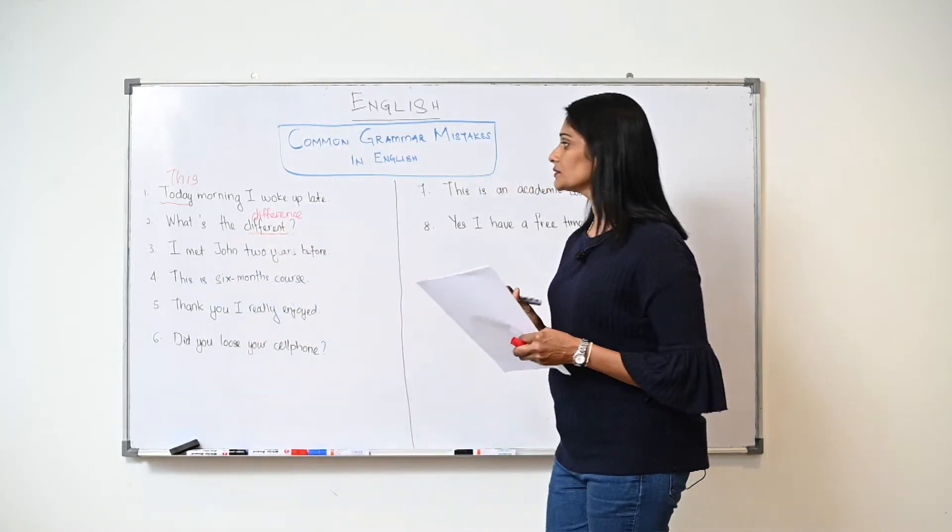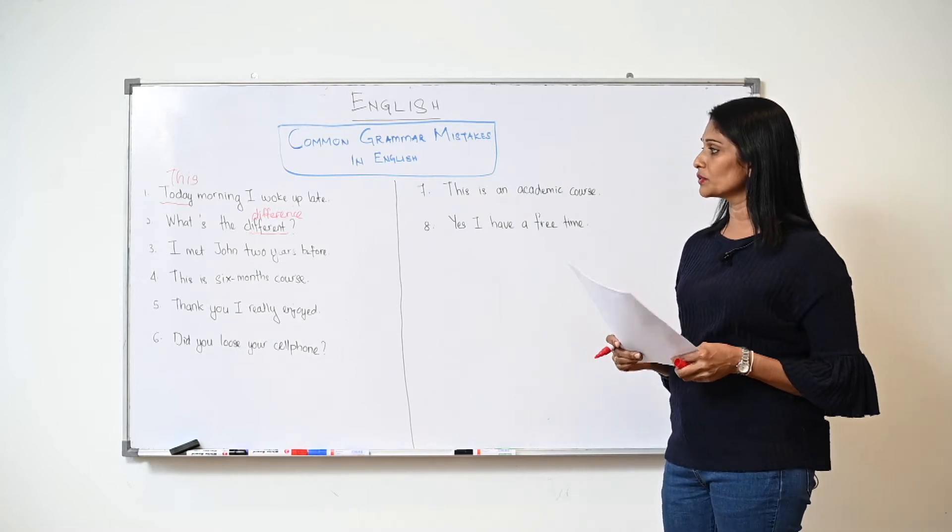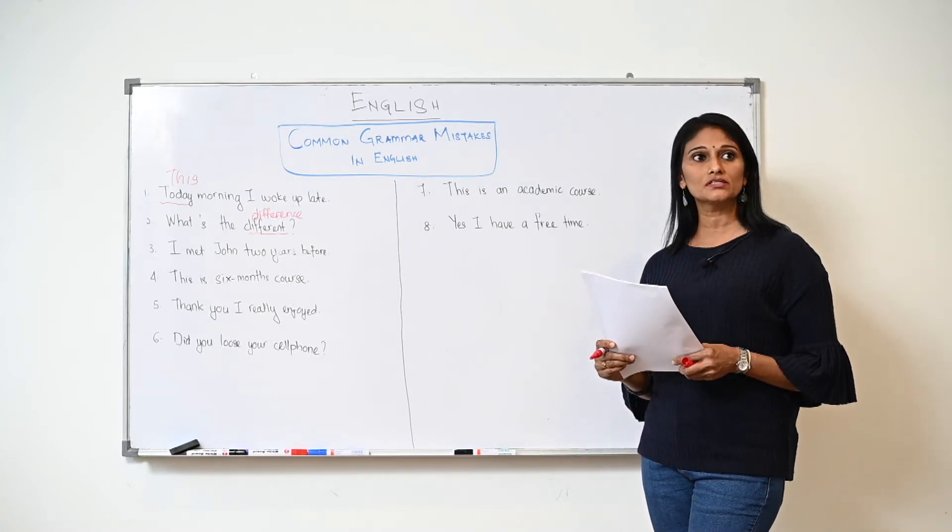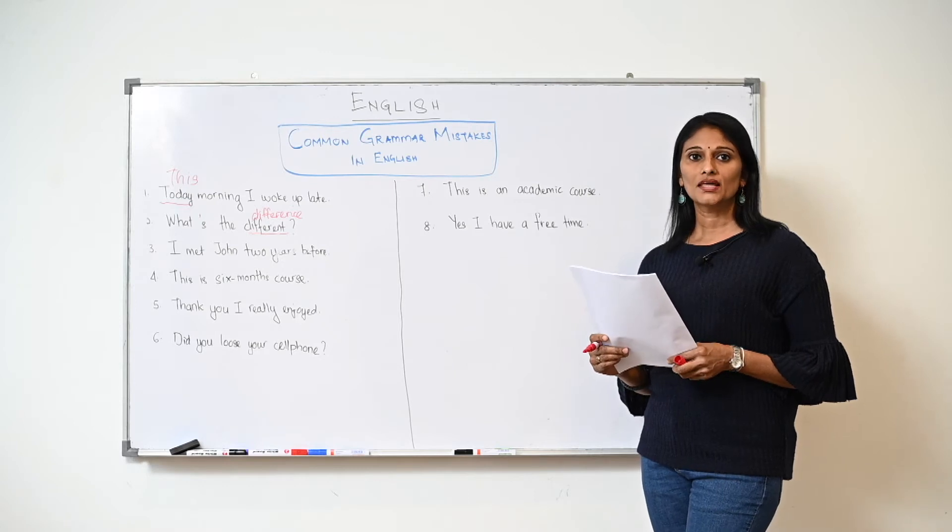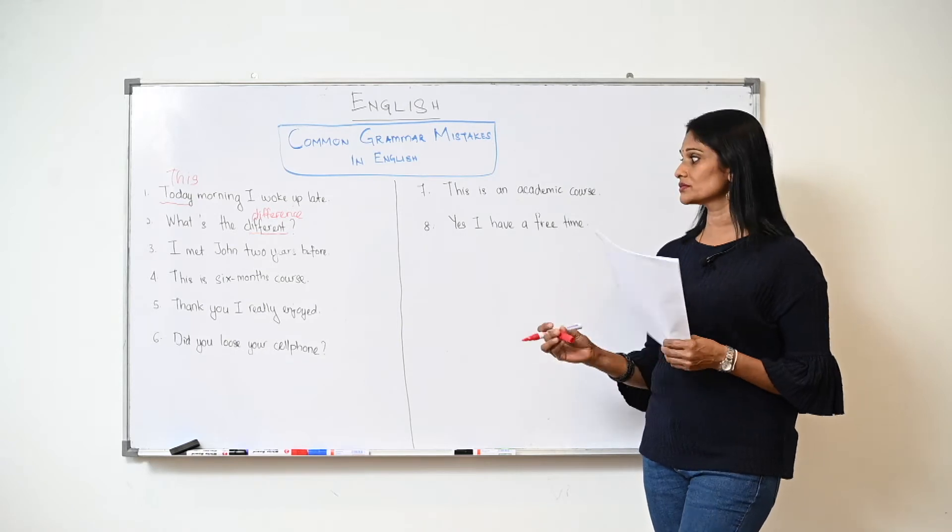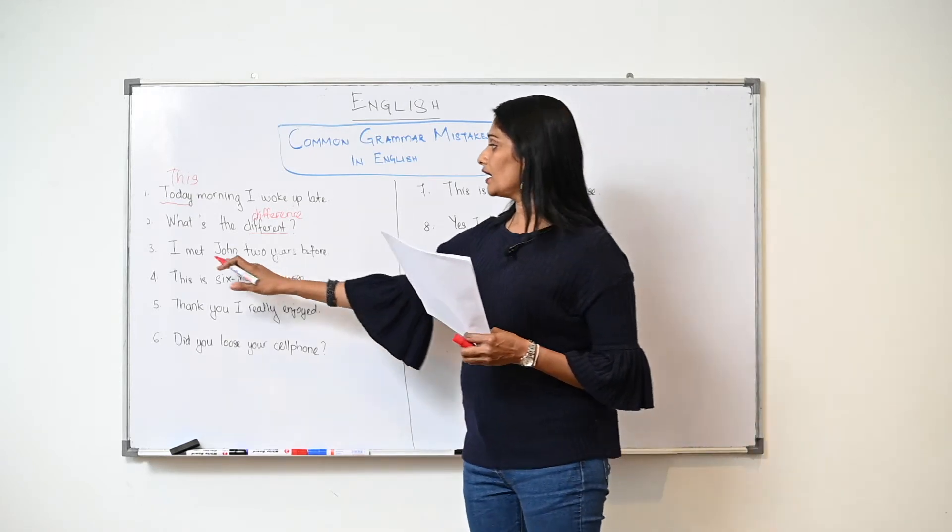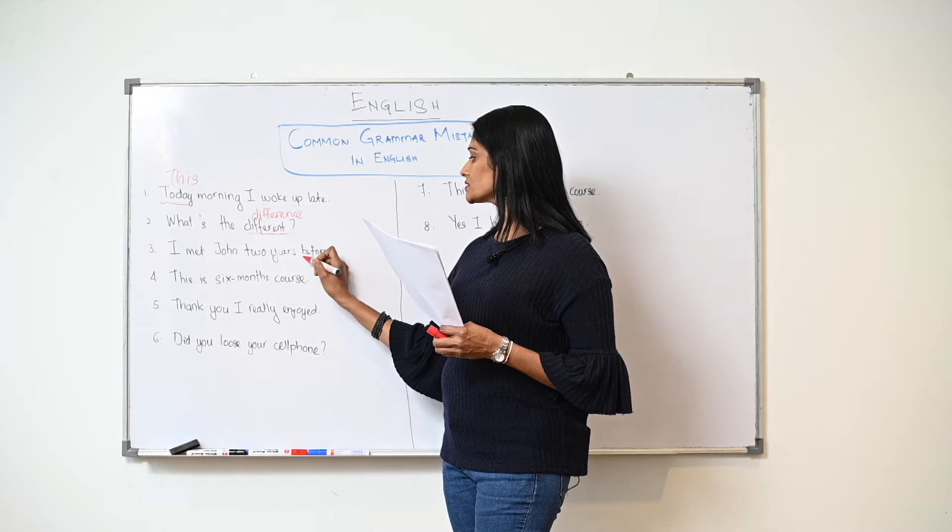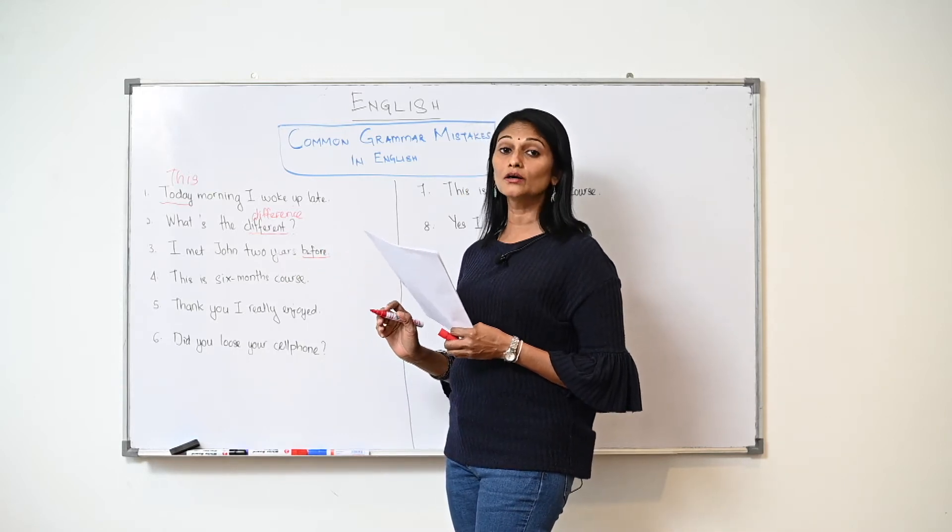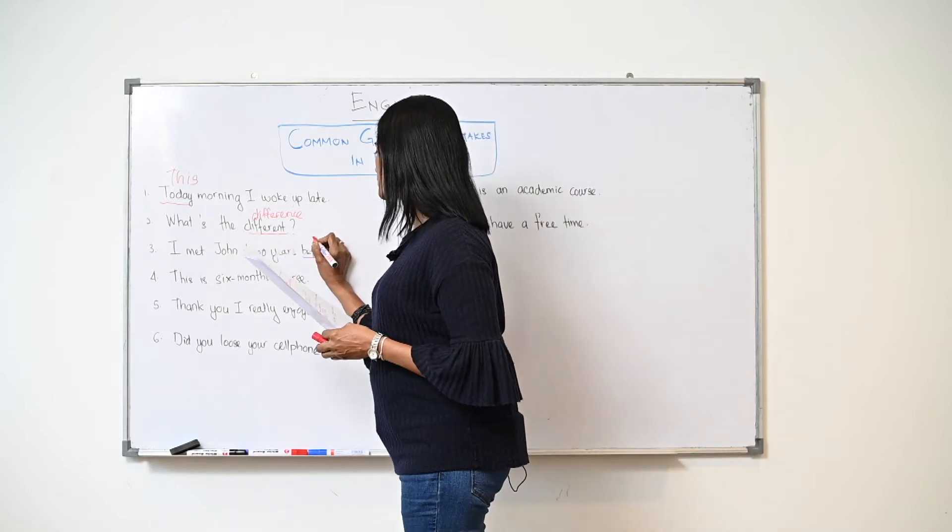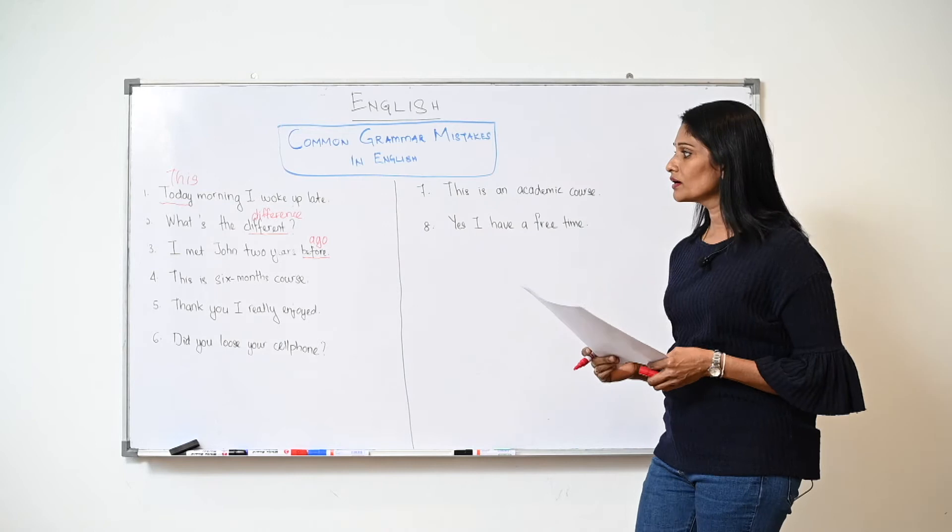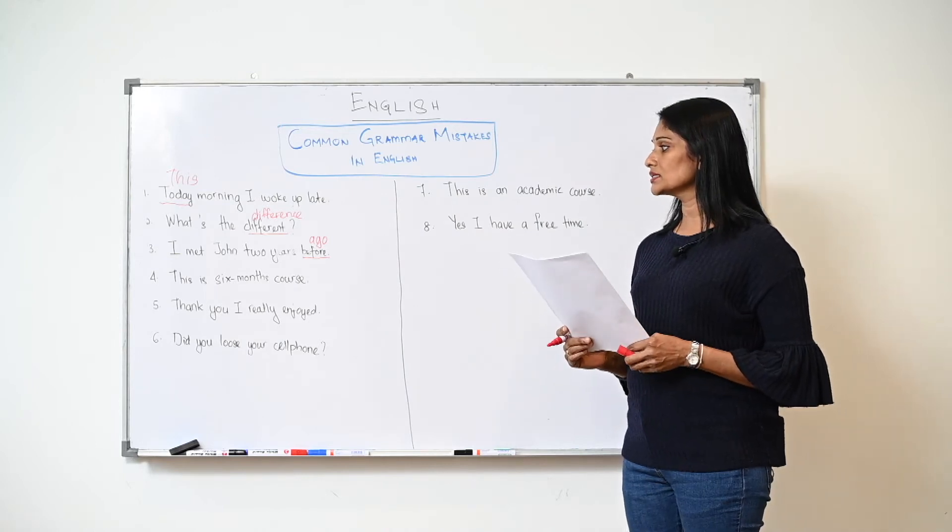Let's move on. Number three: "I meet John two years before." It sounds pretty correct, right? But let me tell you, this is not right. We don't say "before," we say "ago." So the correct word here should be "ago."